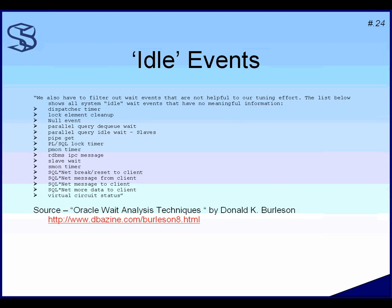A DBAzine article on Oracle wait analysis recommends filtering out events like SQL*Net message from client, SQL*Net message to client, more data to client, virtual circuit status, parallel query idle wait, and slave pipe get. However, I have experienced all of those as events that contributed to real problems. The only truly idle events you never need to worry about are PMON timer and SMON timer.